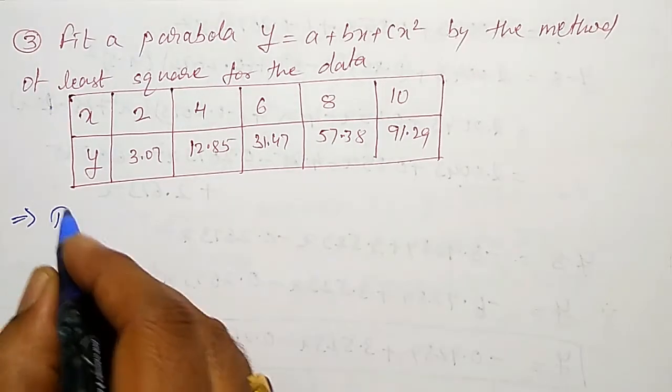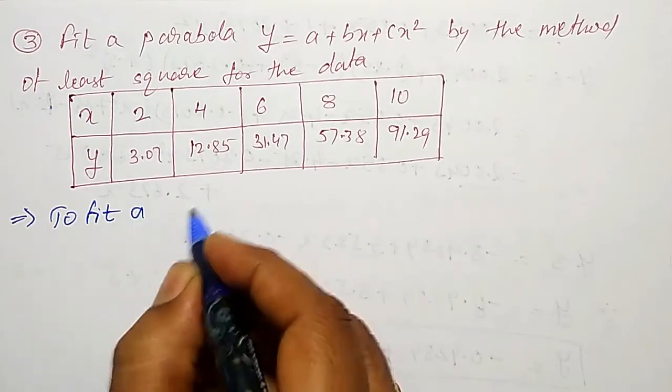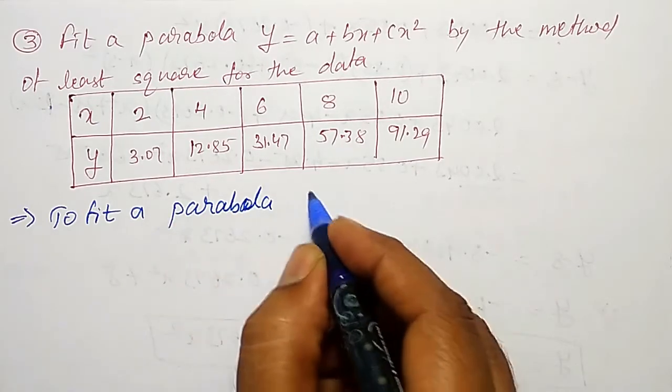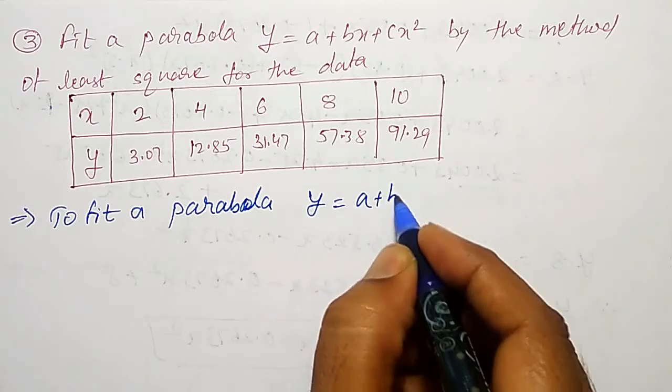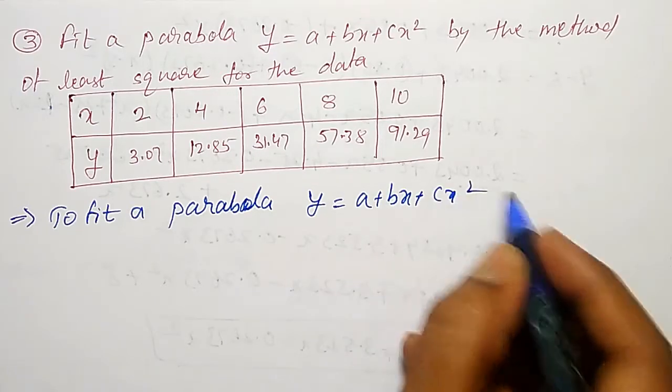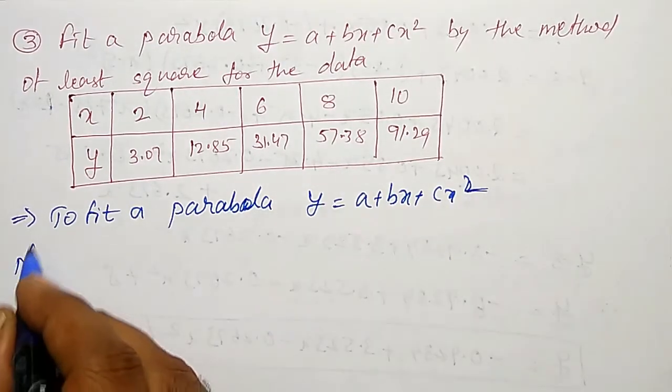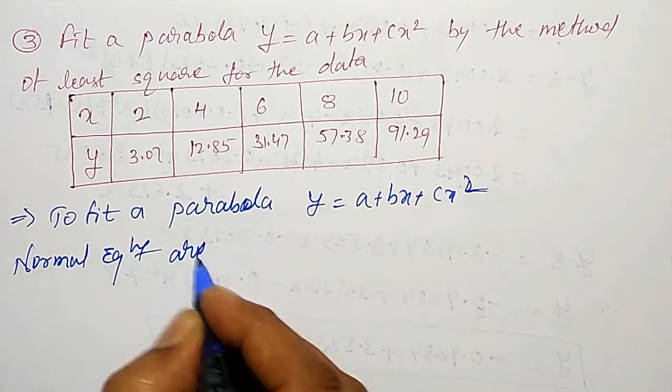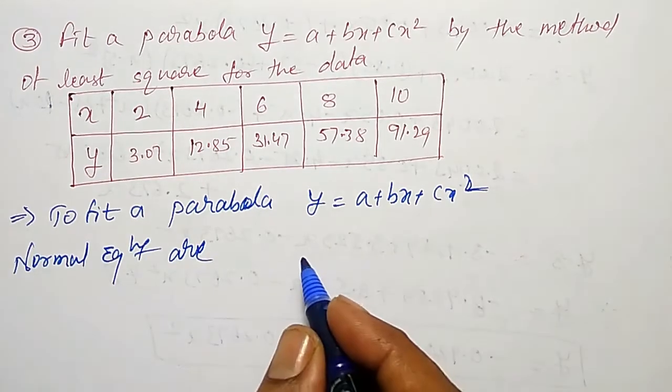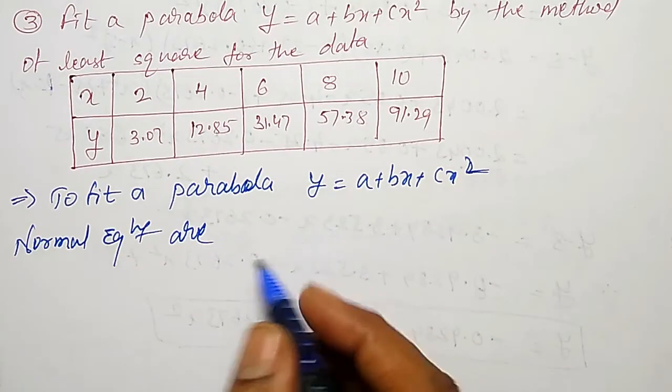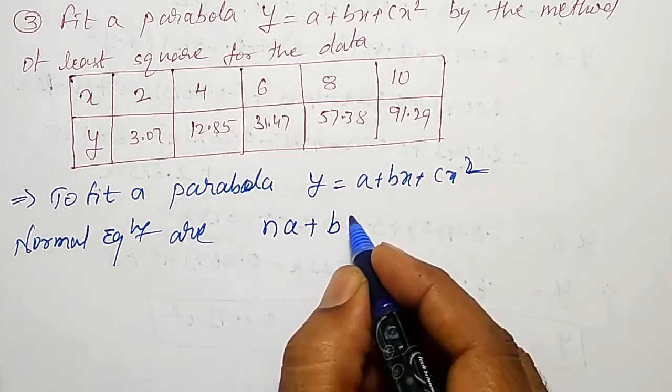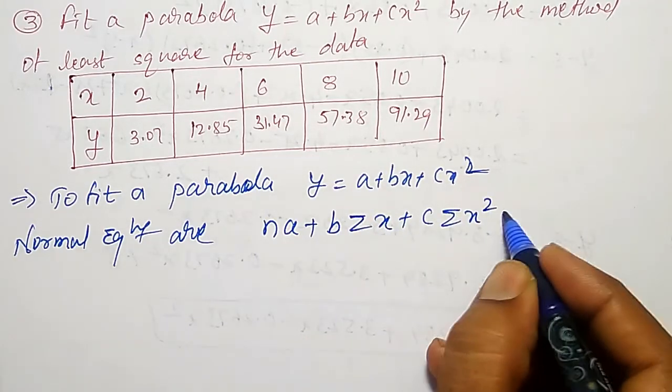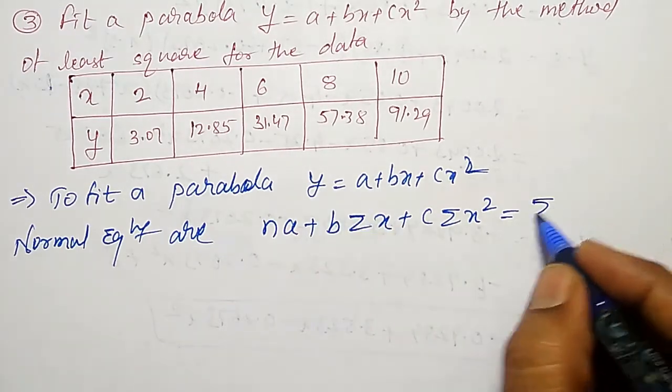To fit a parabola y equal to a plus bx plus cx square, normal equations are nothing but apply the summation for the equation as it is. That is, n into a plus b into summation x plus c into summation x square equal to summation y.